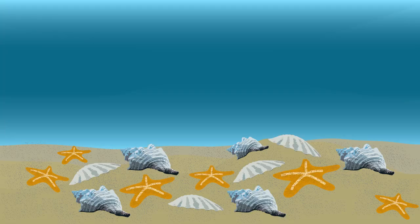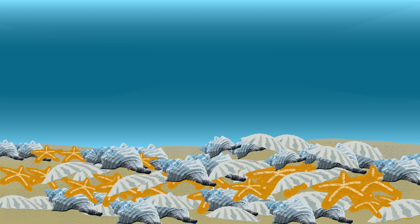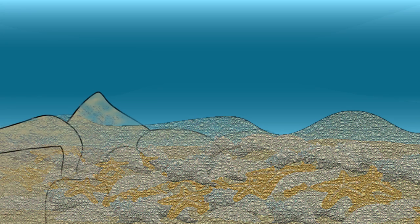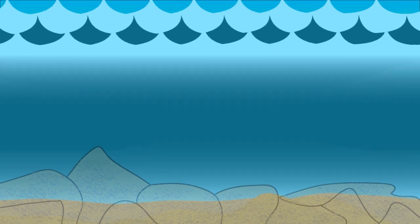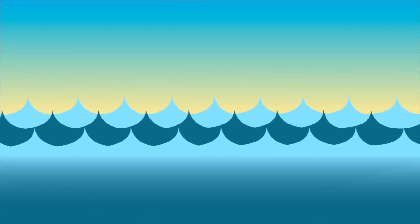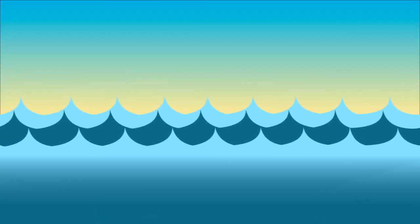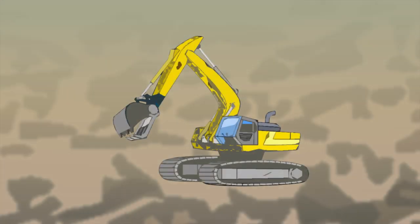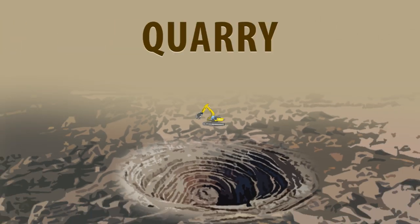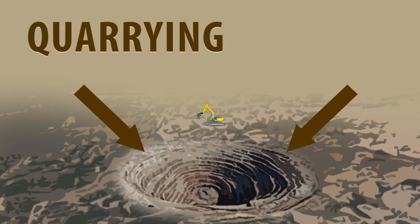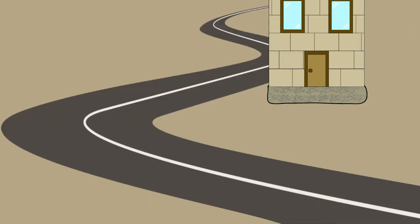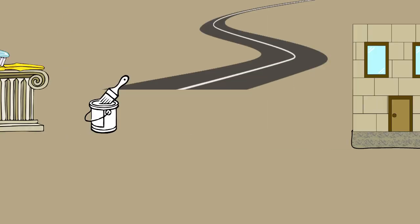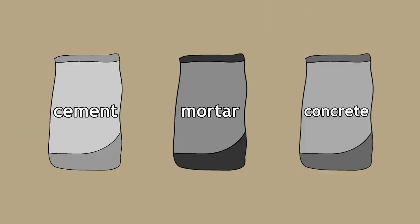We know that limestone is formed from the compression of shells and skeletons of many dead marine organisms. This means that limestone is found where there used to be large bodies of water, and must therefore be mined. A quarry is an open mine, and quarrying is the process by which limestone is mined. Limestone has many uses and is the starting material for even more useful materials.